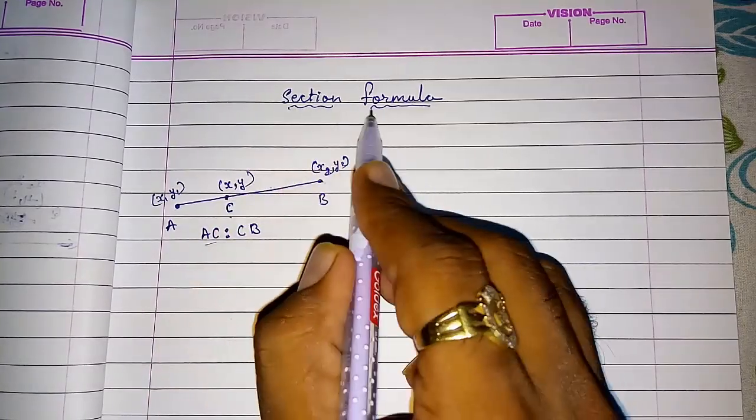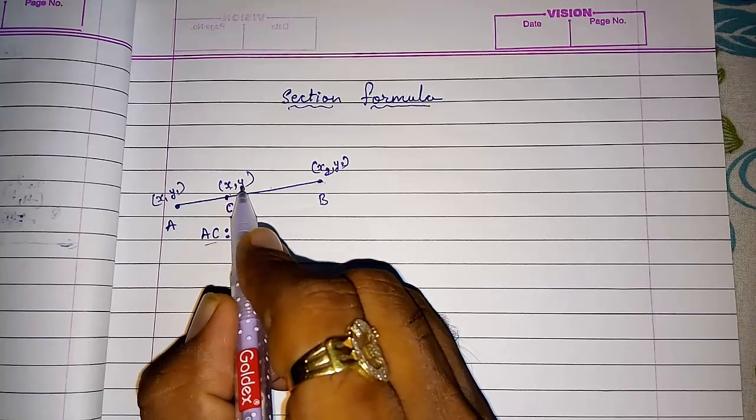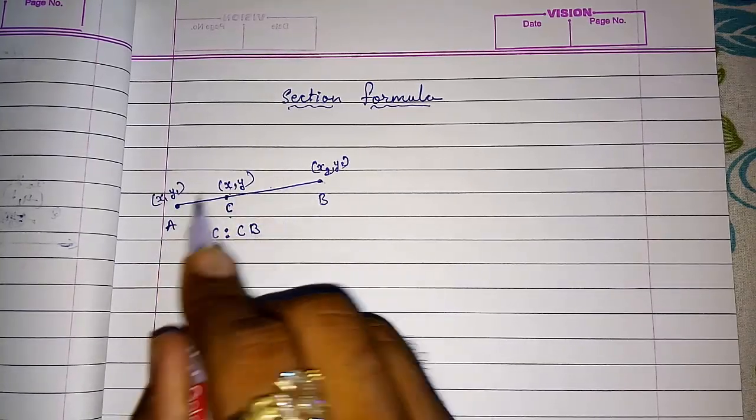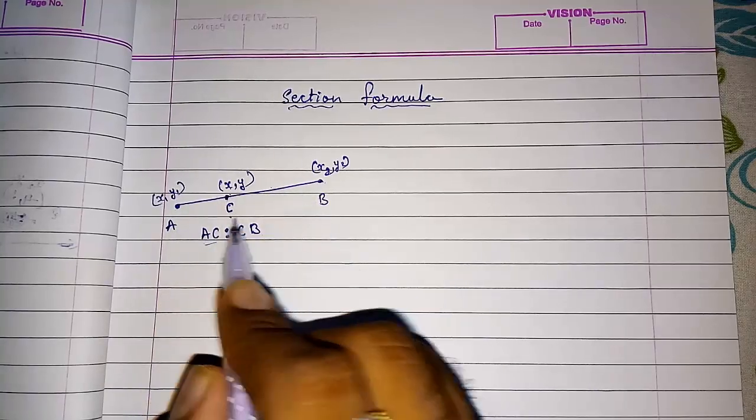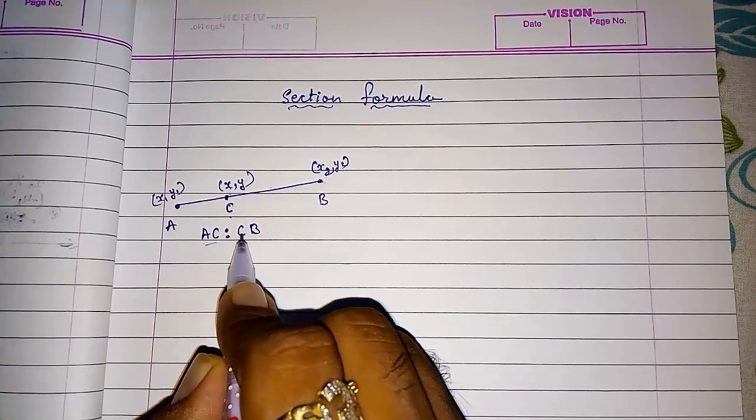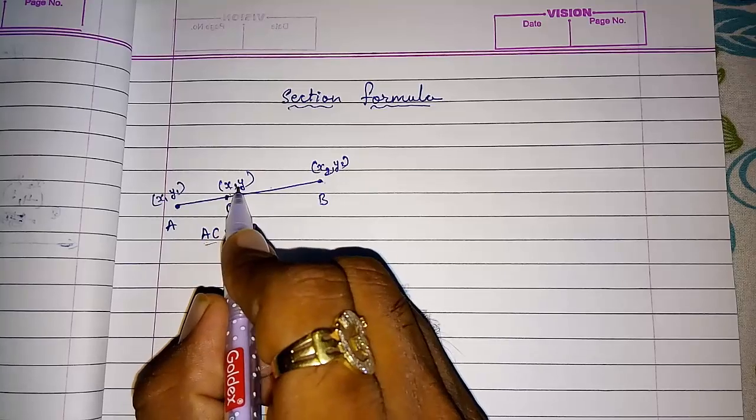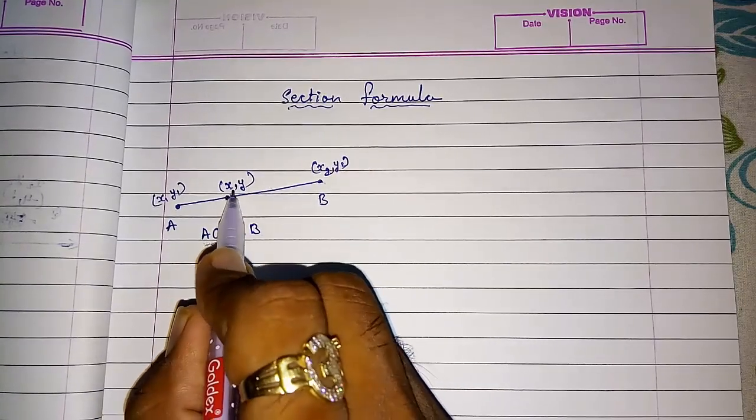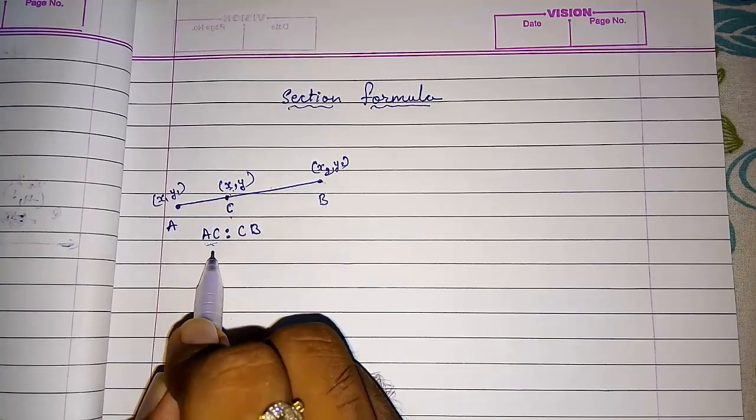Now section formula means we can find this X and Y or point C when they are giving us the ratio of these two parts AC is to CB, or if they are giving us this coordinate then we can find the ratio. If they are giving ratio we can find coordinate. If they are giving coordinate we can find ratio.